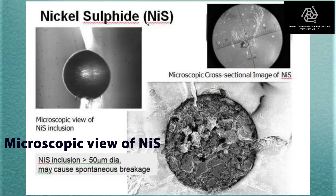NiS — believe me, friends, that's the ghost for you. That's the ghost effect, that's the main culprit for the ghost effect. So what is the ghost effect? If you have balcony railings with 12mm toughened glass, which is popular all across India and even in metro cities, these toughened glasses have the problem of sudden breakage, also called spontaneous breakage, due to nickel sulfide.